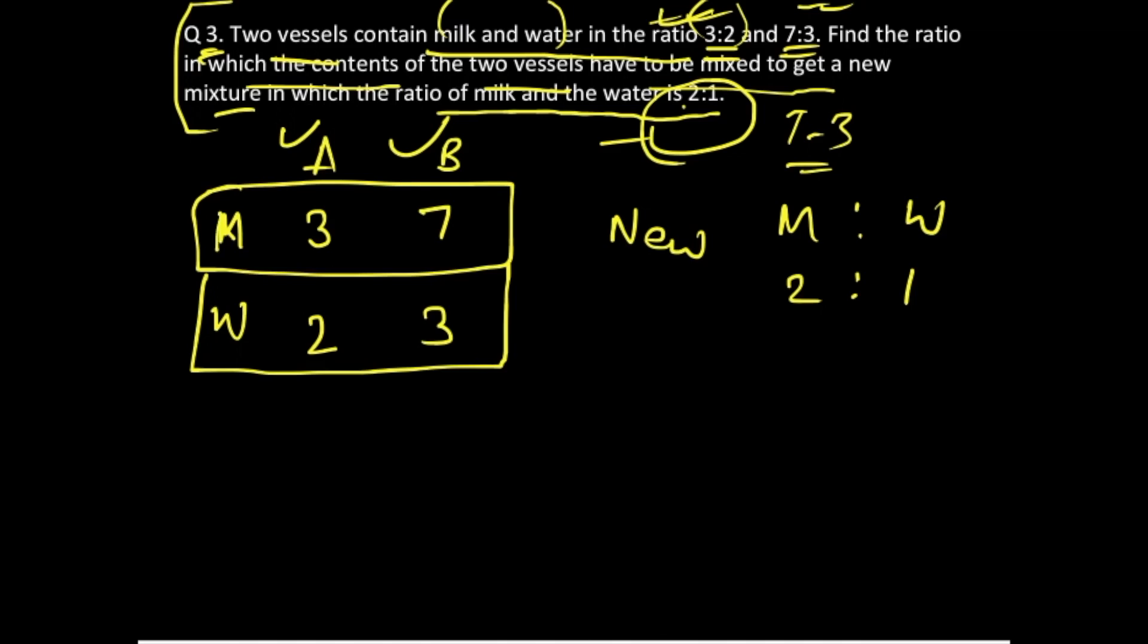The quantity of milk in the first vessel is 3 parts over 5, since 3 plus 2 equals 5. In case of vessel B, milk is 7 parts over 10.